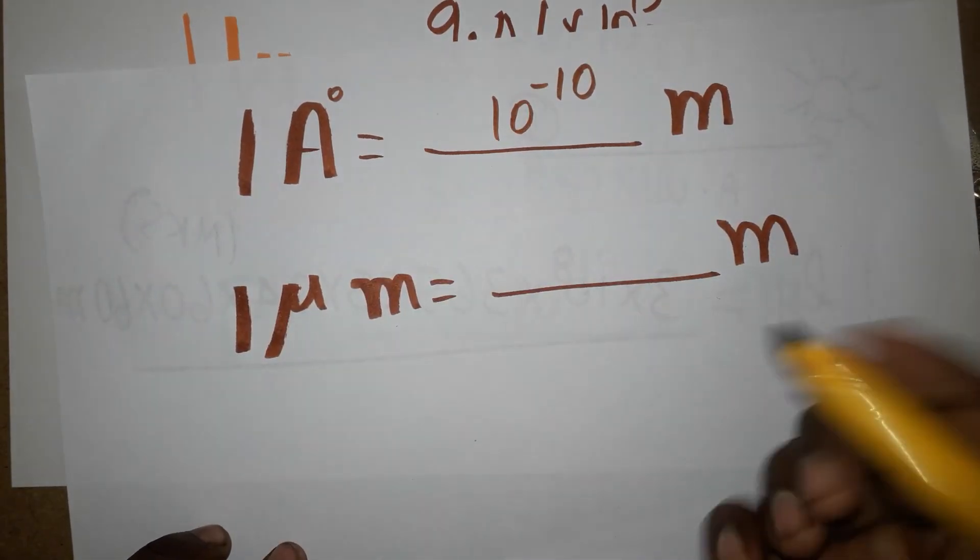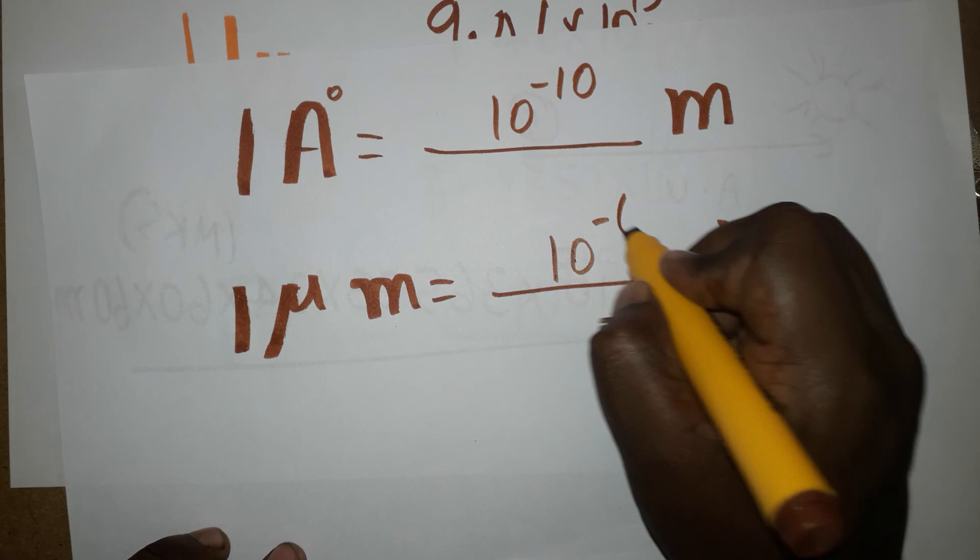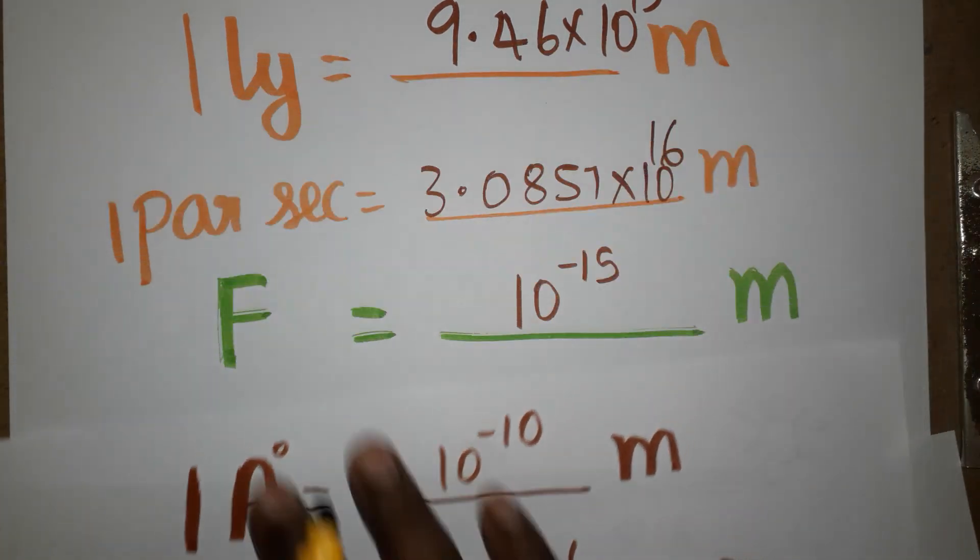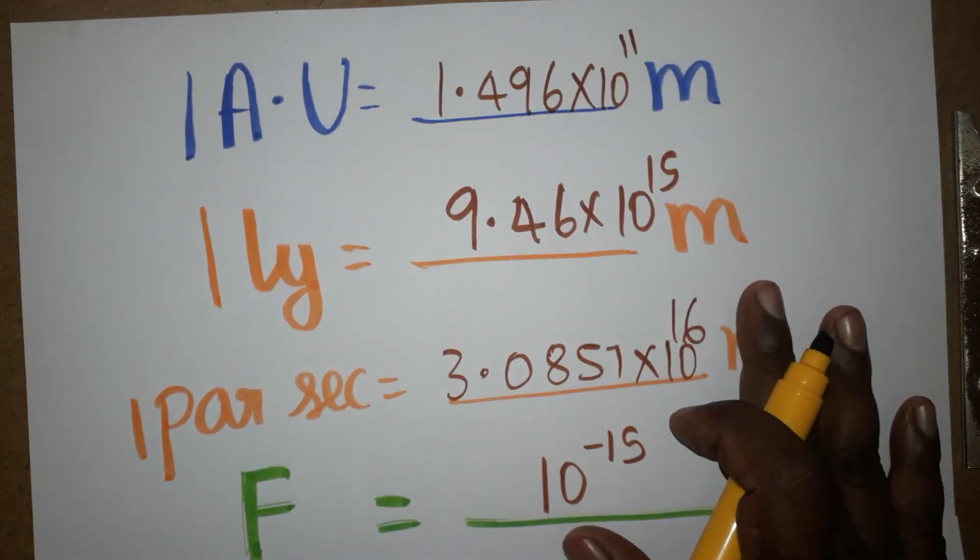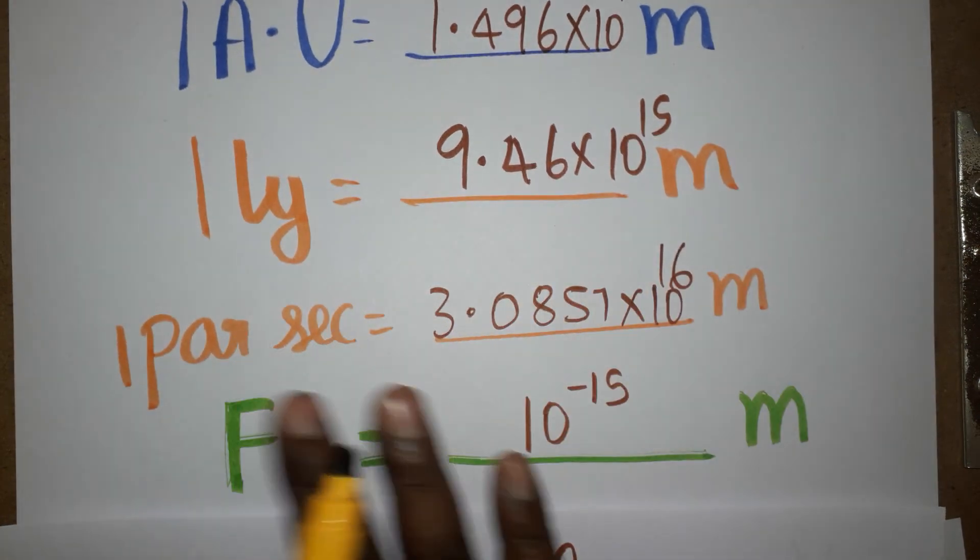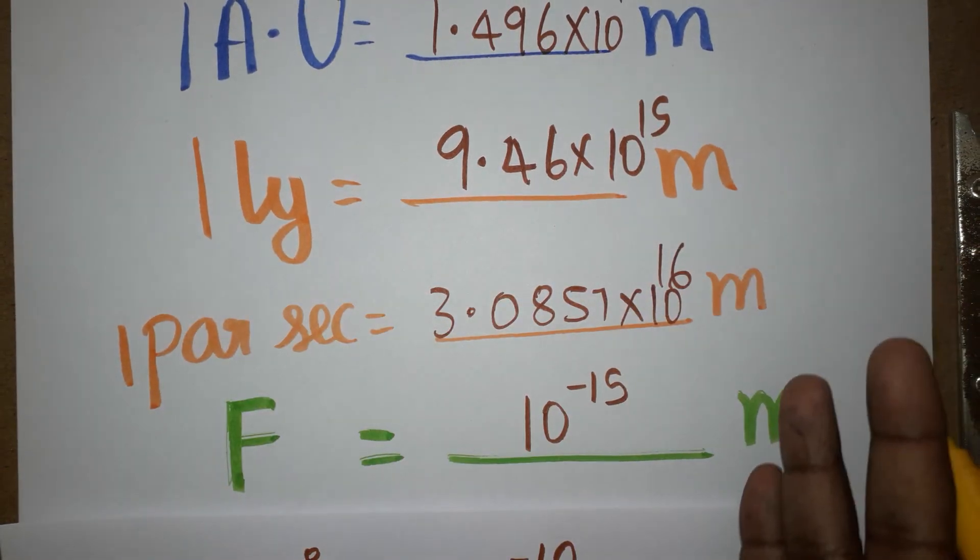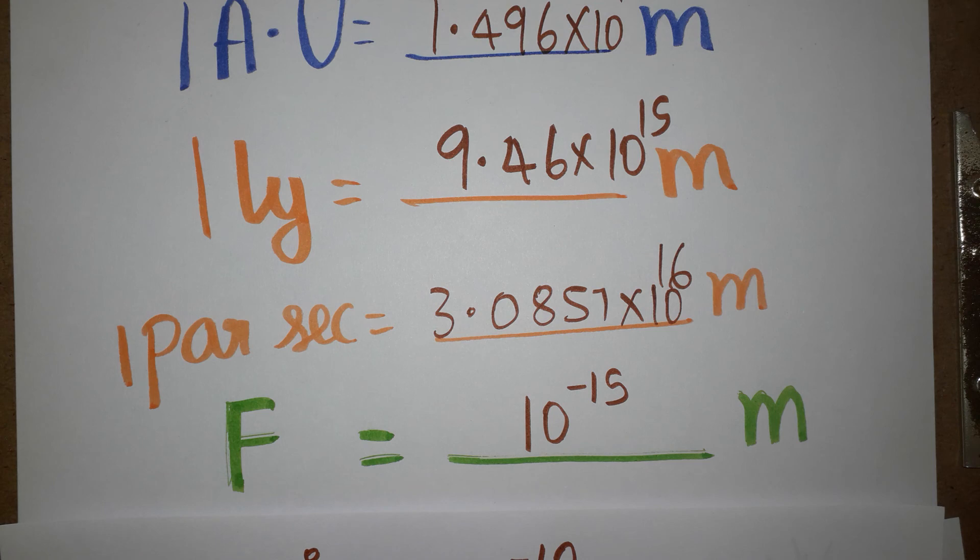The last one is micrometer. Micrometer is 10 power minus 6 meter. So it's a very easy conversion. These are the very famous units we need to know to convert from one unit to meter. Thank you for watching my channel. If you like my channel please subscribe. Thank you everyone.